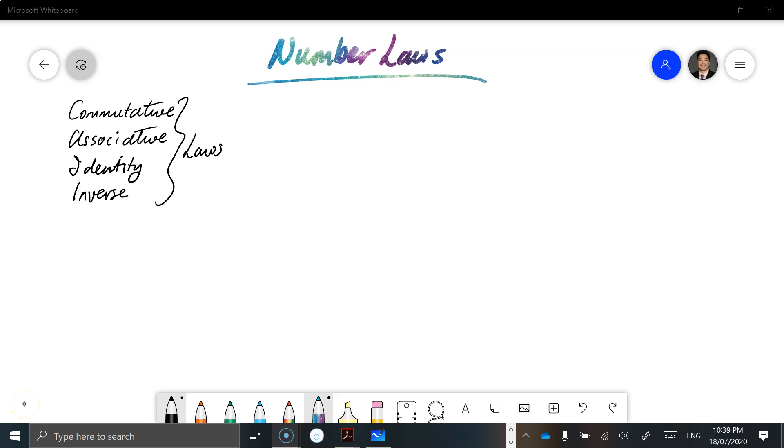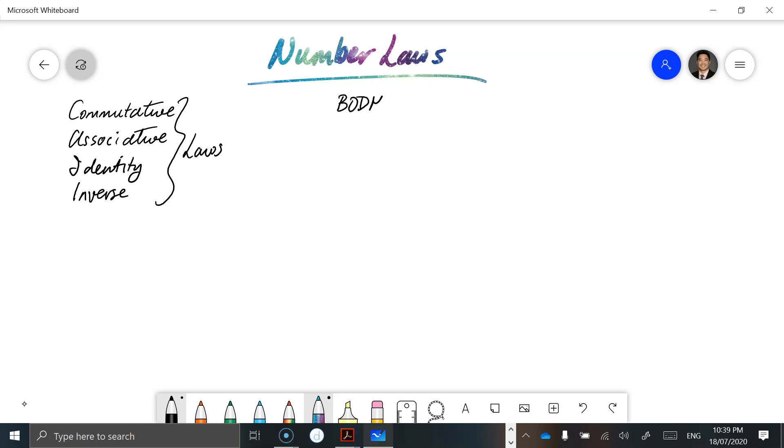So this one is on number laws, Chapter 8 of Algebra, and I find this one very interesting. Again, sometimes mathematics can be overcomplicated. We've got four different laws and the question is do you know which one's which, but fundamentally I want you to really understand that BODMAS is probably the most important and covers in its simplest form.